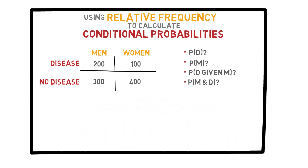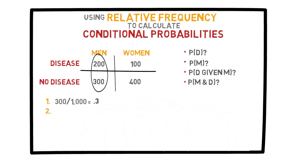Okay, let's answer these questions. Question 1 is simple. The people who have the disease are both men and women, so we just divide 300 by 1000 to get a probability of 0.3 for event D. Now, the probability that the person is a man deals with this column. So you add 200 and 300 to get 500, then divide that by 1000, and the probability of M is just 0.5.